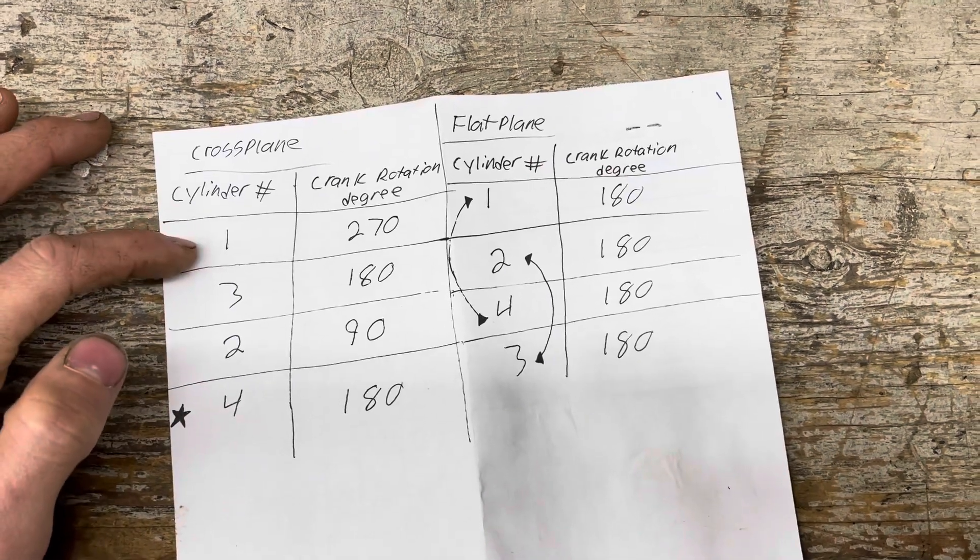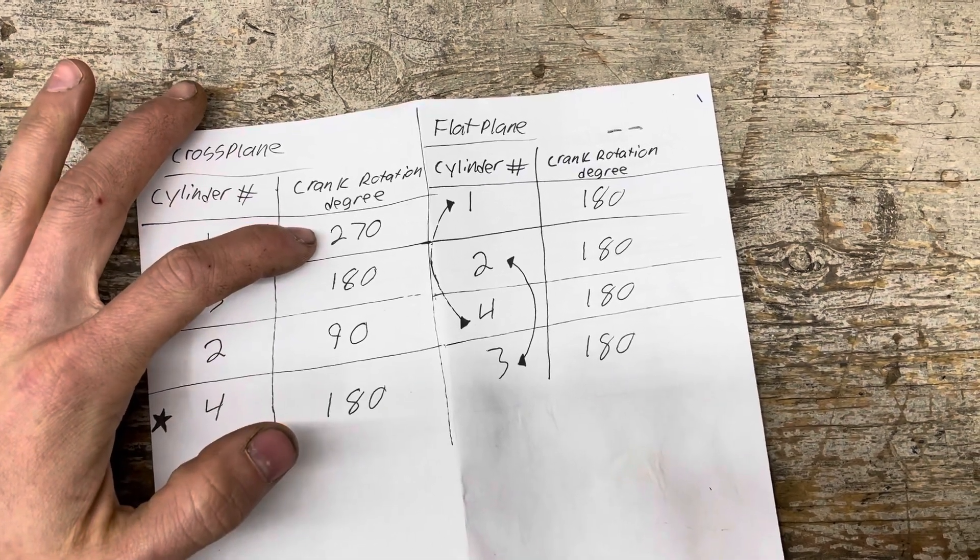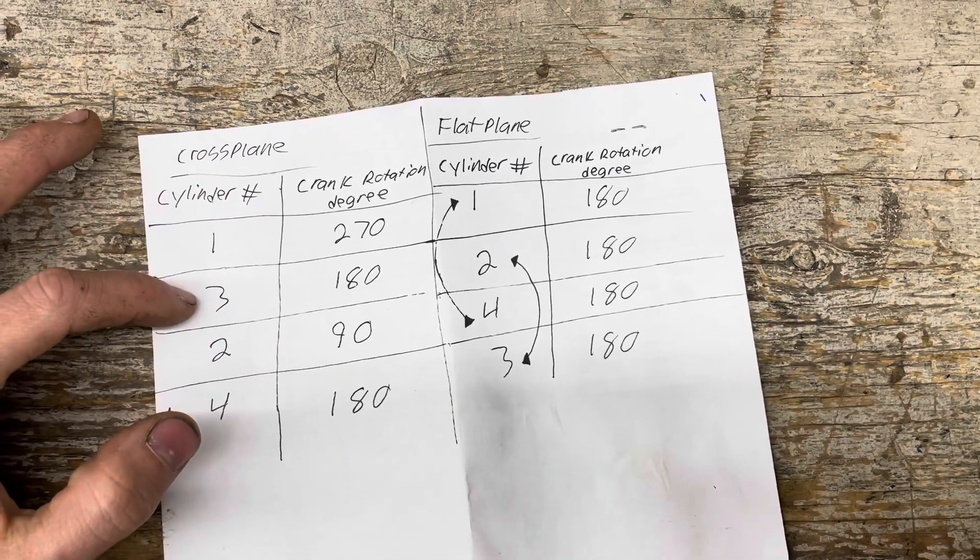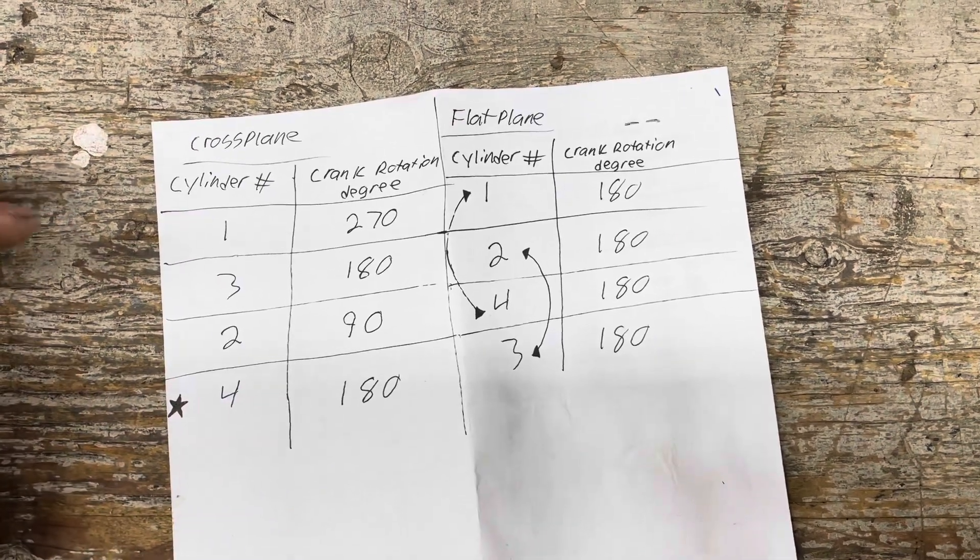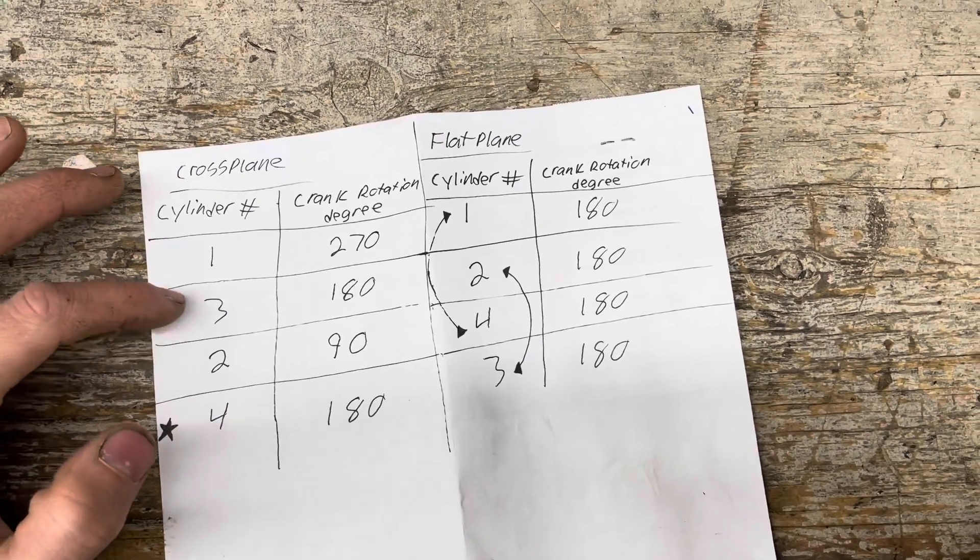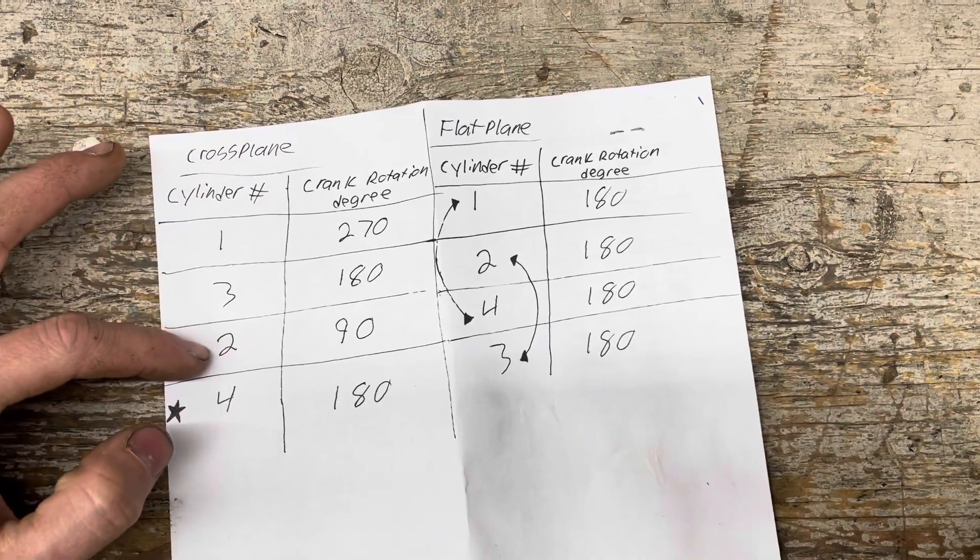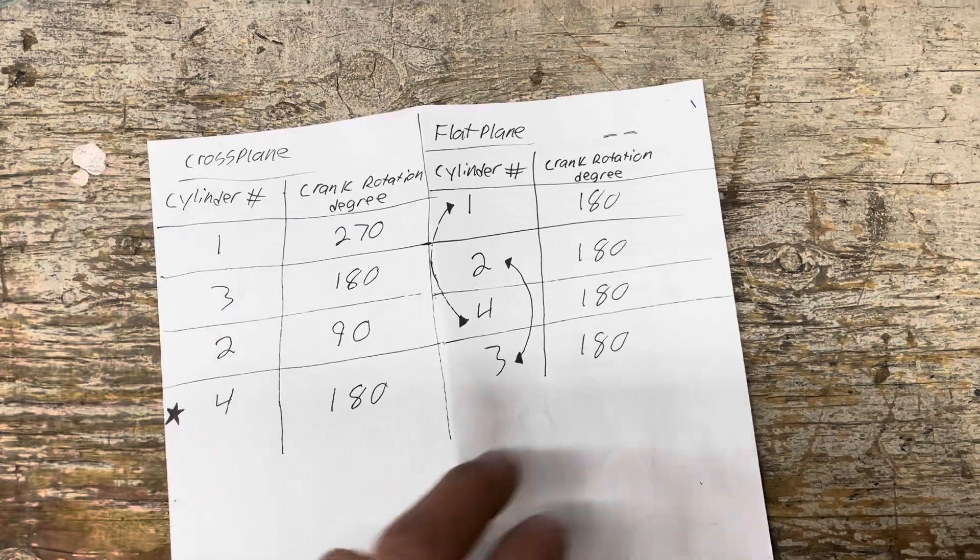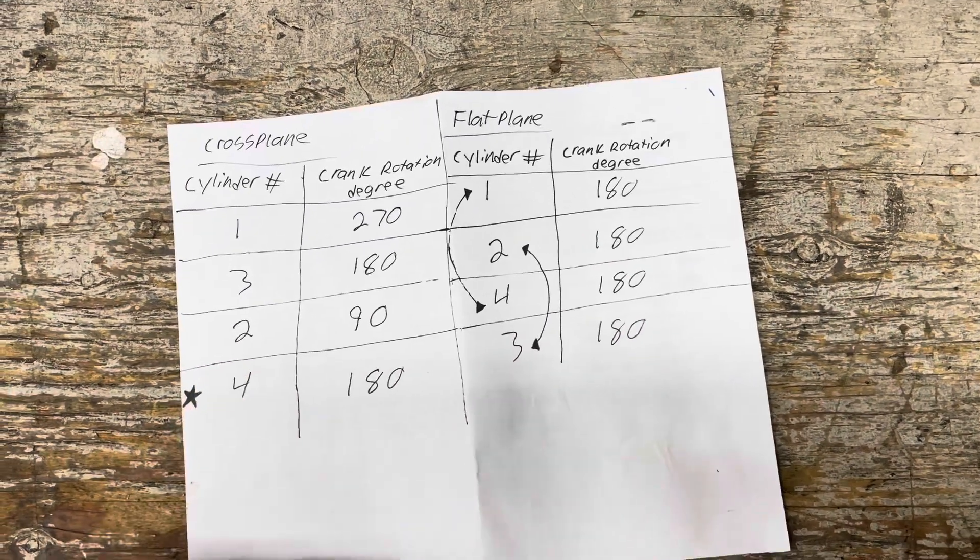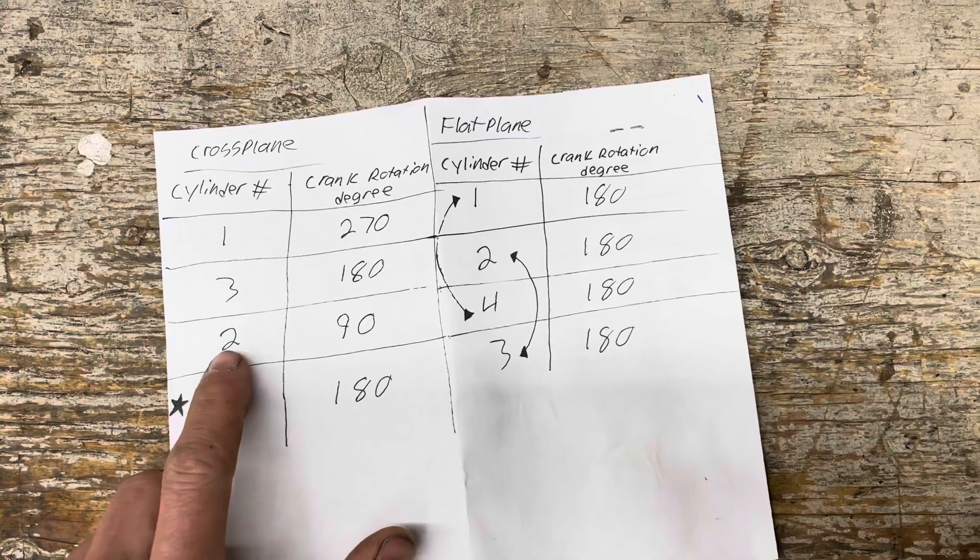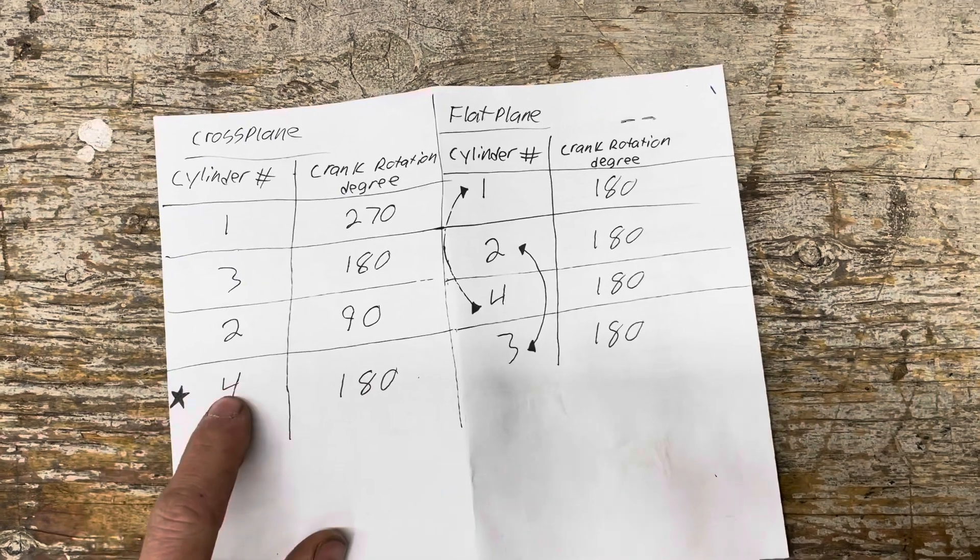So cylinder one's on top dead center, your power stroke. Your crank actually rotates 270 degrees before cylinder three's at top dead center, and that is massive. After cylinder three fires you have a normal 180 degree crank rotation to get number two on top dead center. So that would be similar to your flat plane crank design. And then this is where it gets interesting as well. So cylinder two fires and you only have 90 degrees crank rotation until number four hits.